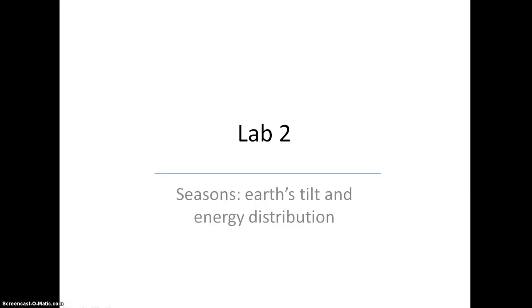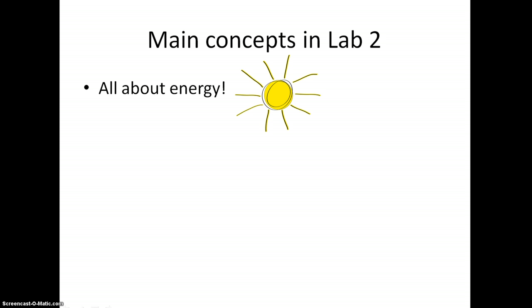In Lab 2, we will be looking at why we have seasons and why different parts of the Earth have different temperature patterns. Lab 2 is all about energy. Energy in our exogenic Earth system comes from the sun. We call it insolation.